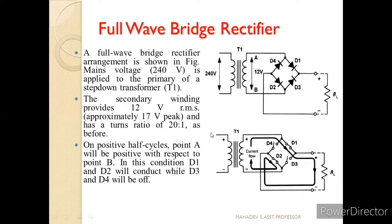Now we can understand the full wave rectifier using the bridge rectifier circuit. In the bridge rectifier, four diodes are connected in the form of a bridge as shown. During the positive half cycle, diode D1 and diode D2 get on, and current starts flowing from D1 through the load resistance RL and then to D2, forming a closed loop. During the positive half cycle D1 and D2 are on, while D3 and D4 are off as they become reverse biased.